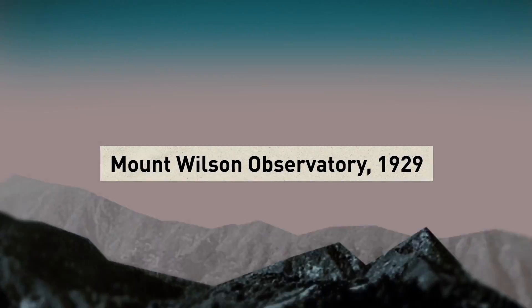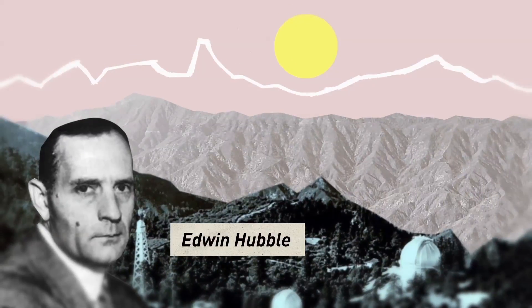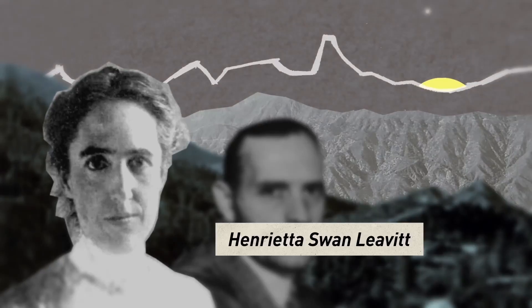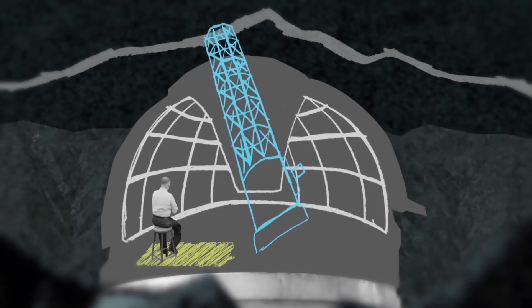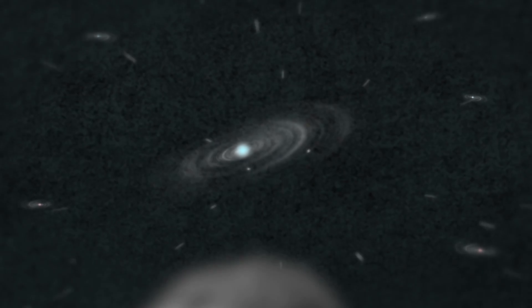In 1929, American astronomer Edwin Hubble made a dramatic discovery. Building on work by Henrietta Swan-Levitt, he realised that wherever he pointed his telescope, distant galaxies appeared to be rushing away from us. The further away they were, the faster they moved.